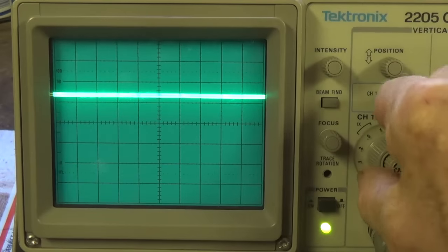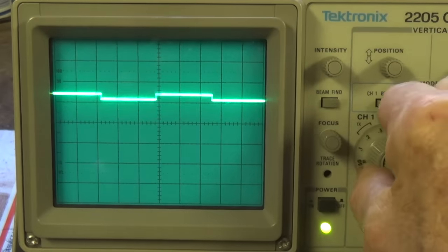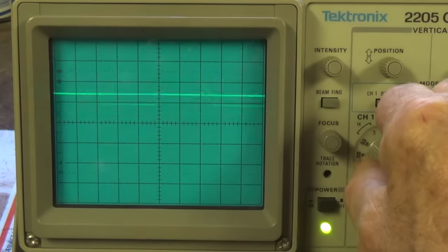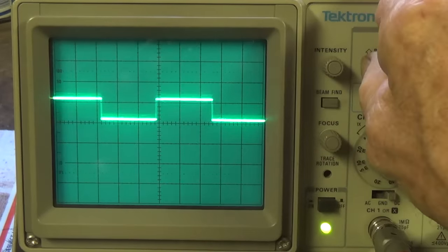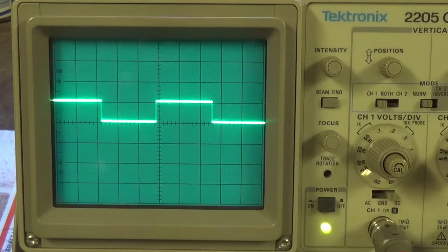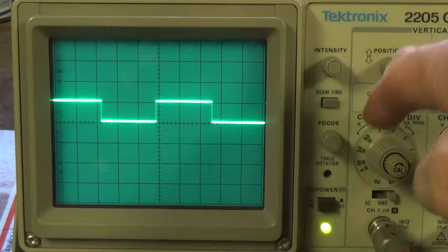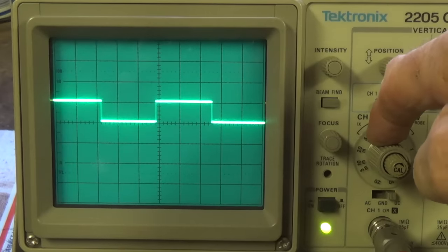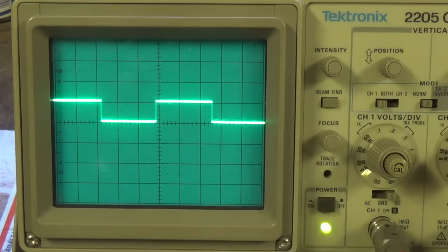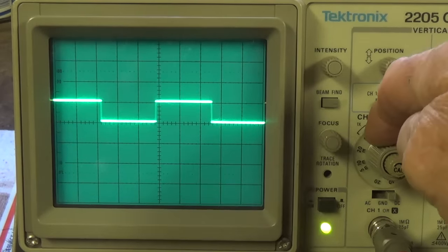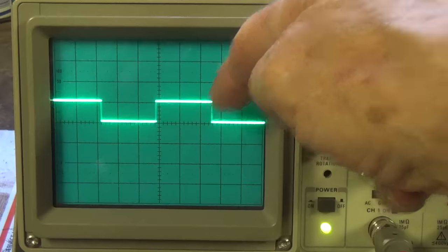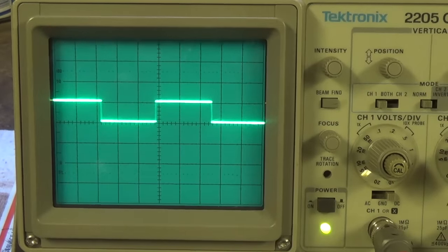Well, let's see if it works. 0.2, 0.1, 0.05. There it is, exactly the same square wave. So by altering this setting to one-tenth, we now exactly match a voltage output that was diminished to one-tenth. So one-tenth the voltage, one-tenth the setting, you get exactly the same screen plot.